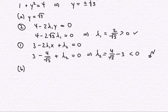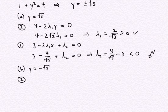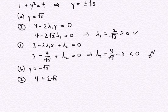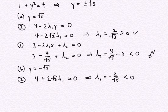For the sub-case y equals negative √3, from condition 2 we get 4 plus 2√3·λ₁ equals zero, which immediately gives λ₁ as a negative number. This is also a contradiction, so no candidate point from this sub-case either.